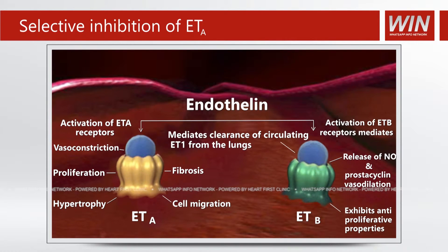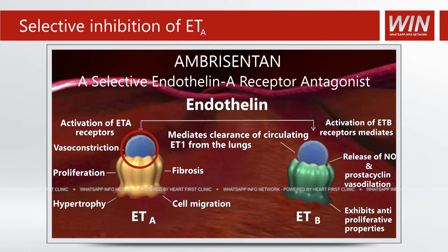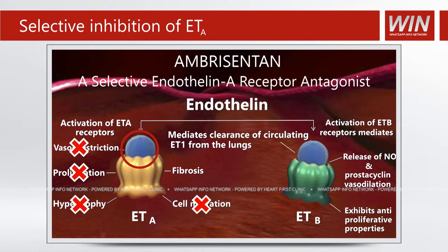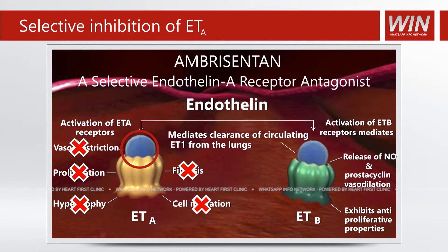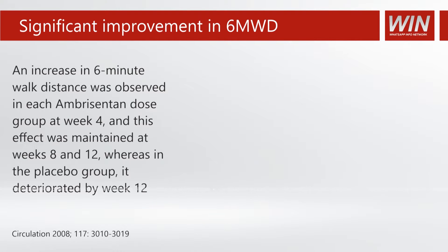Ambrisentan is a selective endothelin A receptor antagonist. By blocking the endothelin A receptors, it negates the vasoconstriction, proliferation, hypertrophy, and cell migration, and allows for nitric oxide release, vasodilatation, and anti-proliferative properties. Clinical trials have been conducted to establish the effectiveness of ambrisentan.